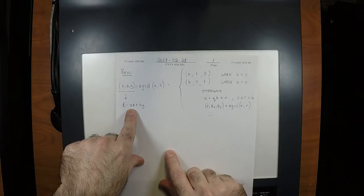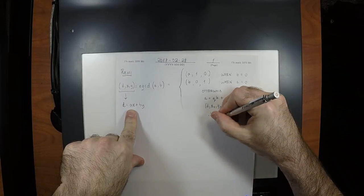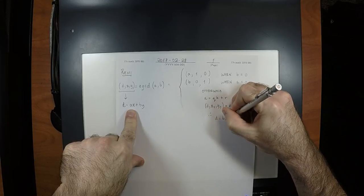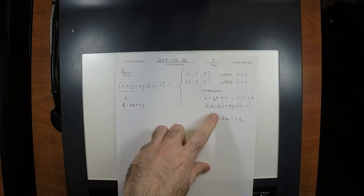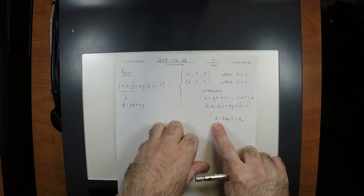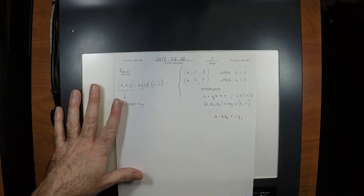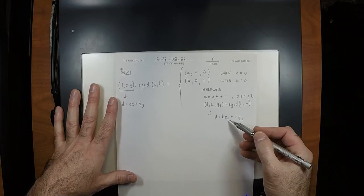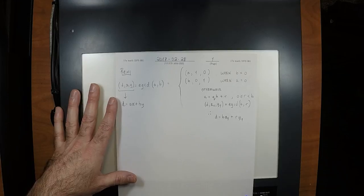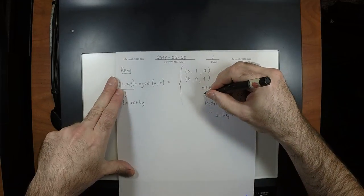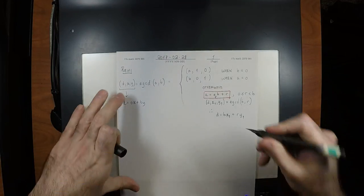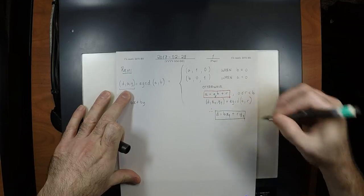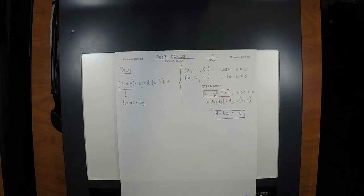The equation that must be true is D equals B·X1 plus R·Y1 — meaning the GCD of B and R is D, with Bezout coefficients X1 and Y1. Now we want to take these Bezout coefficients and turn them into Bezout coefficients for A and B. The trick is that we have two equations: the red equation from the division algorithm, and the green equation from the recursive result.